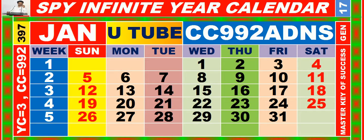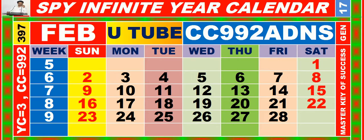Calendar for the month of January, having calendar code equal to 9-9-2. Calendar for the month of February, having calendar code equal to 9-9-2.